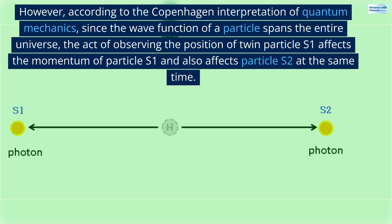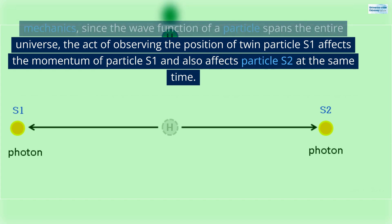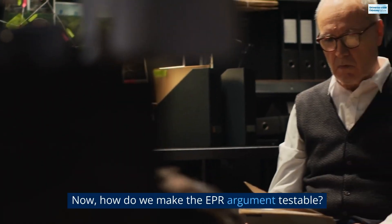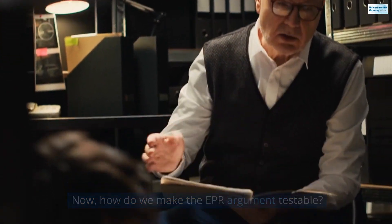However, according to the Copenhagen interpretation of quantum mechanics, since the wave function of a particle spans the entire universe, the act of observing the position of twin particle S1 affects the momentum of particle S1 and also affects particle S2 at the same time. Now, how do we make the EPR argument testable?